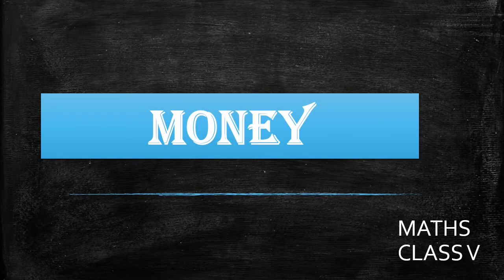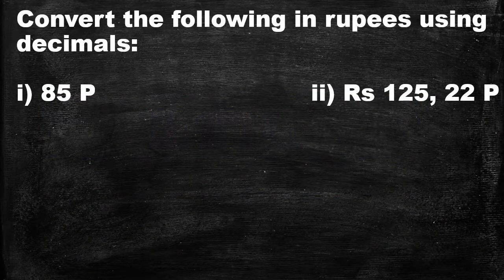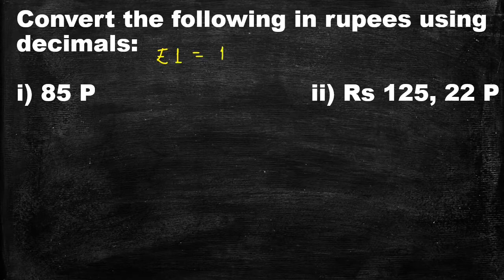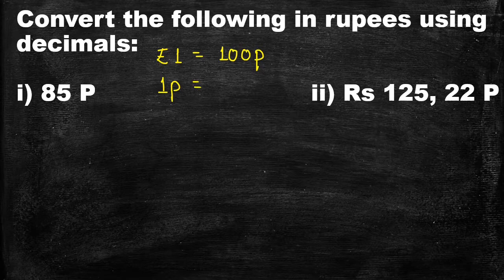Hello children, today we are going to start the next chapter: money. We know Indian currency is rupees and paise, where 1 rupee equals 100 paise, or we can say that 1 paise equals 1 upon 100 rupees.